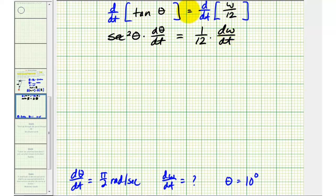Remember, we're trying to solve for dw dt, so if we switch this around and multiply both sides by 12, we would have dw dt equals 12 times secant squared theta times d theta dt.